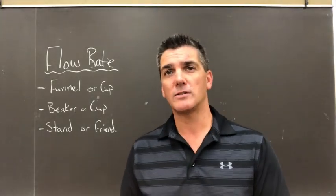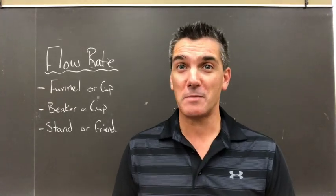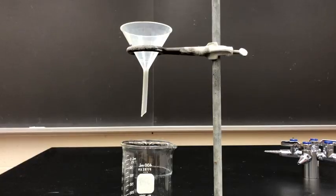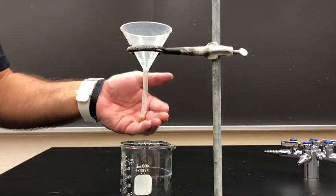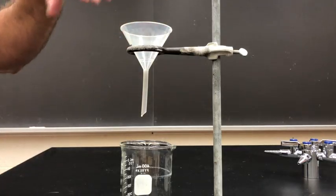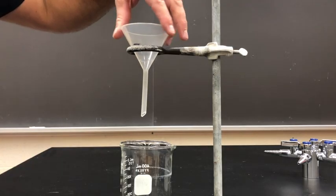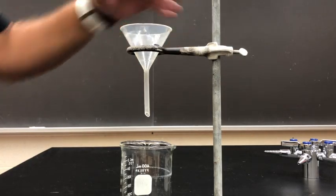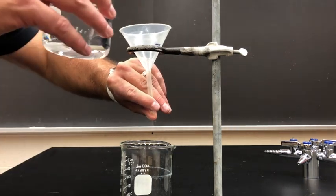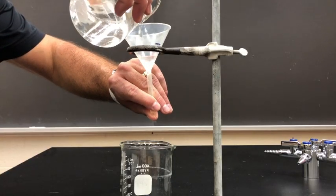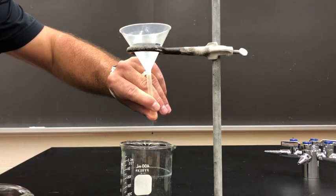You can follow along with the notes posted online. Let's get started. Here we have our apparatus set up — a beaker to catch the fluid as it flows out of the funnel. I've pre-measured a mark on the funnel at 22 milliliters. We're going to start with the water. I'll hold my thumb over the bottom, fill it up to the mark, and let go.